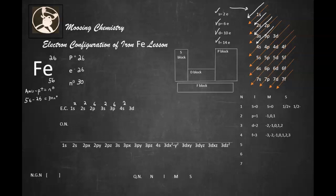And then now we're going to get to 3d here, and we're going to have 3d6. If you add that up, 2 and 2 and 6, 2 and 6 and 2 and 6, that makes 26 electrons.